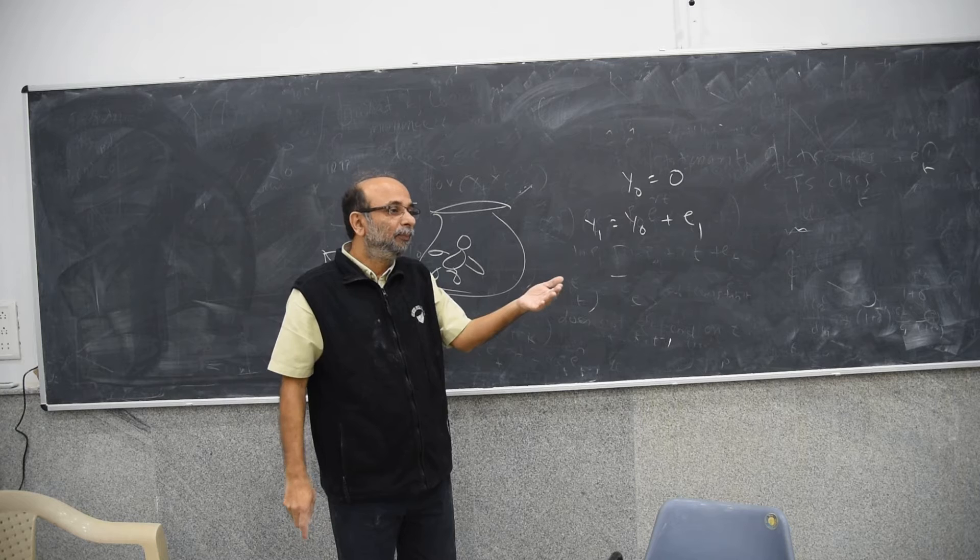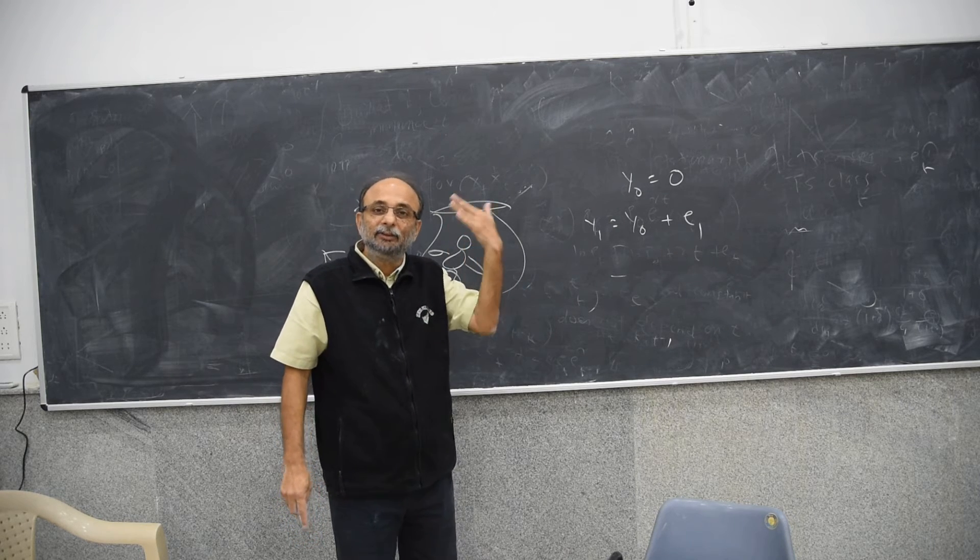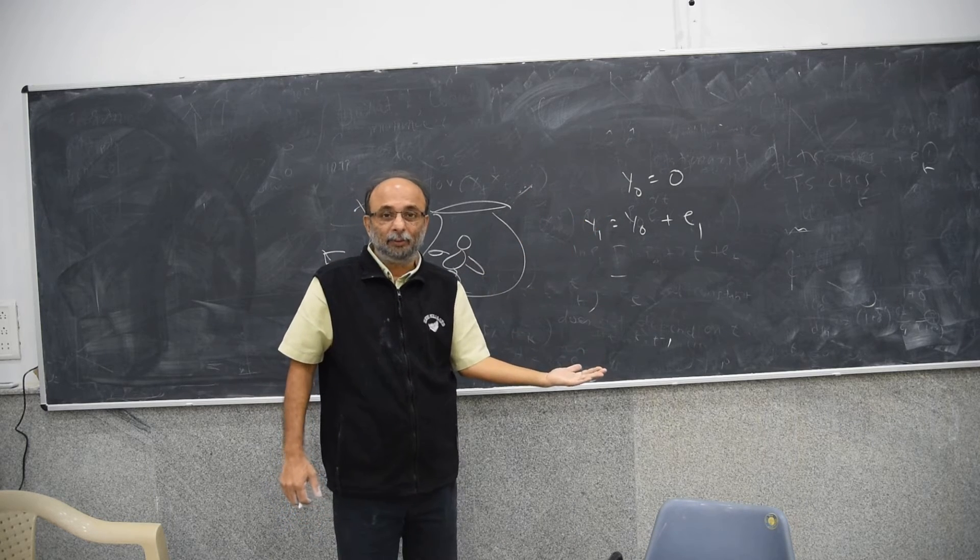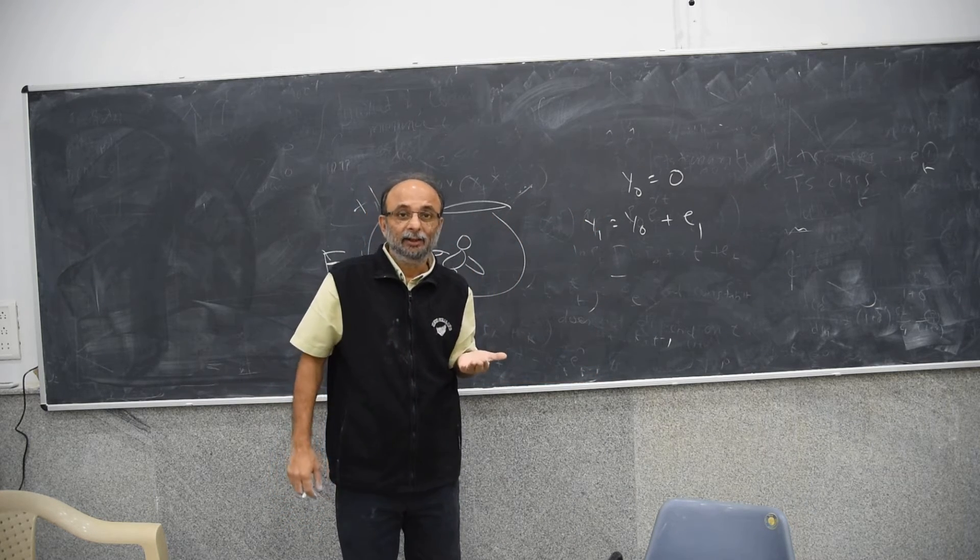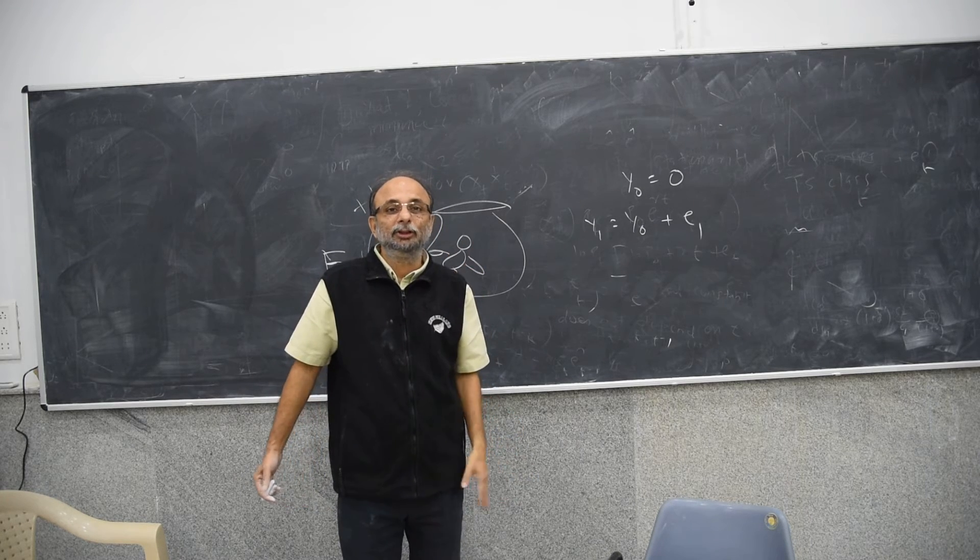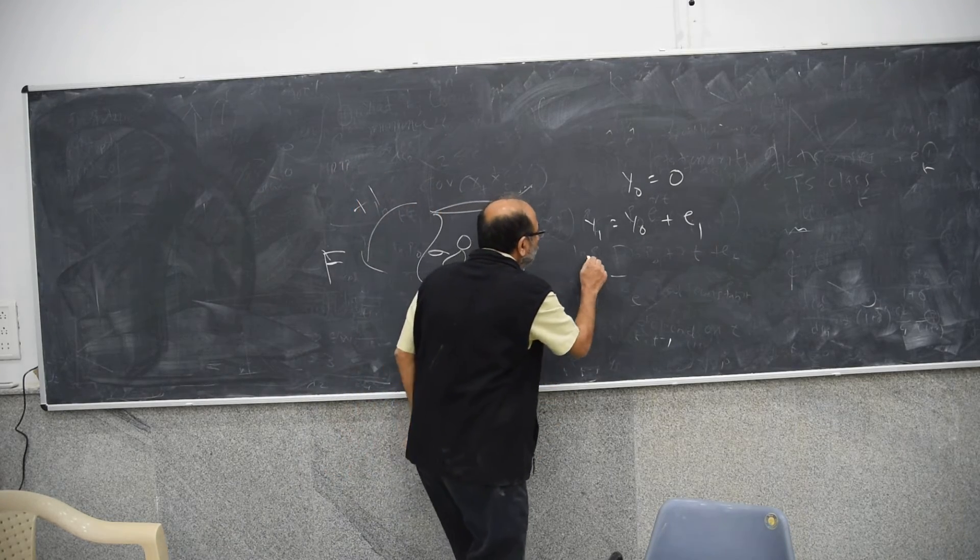So if E1 takes the value plus one, I have one rupee in my pocket. If E1 takes the value minus one, I have minus one in my pocket. I owe one rupee to my friend. We write a note saying that I owe you one rupee, but I don't have any rupee, so it is really minus one. Now, what will be y2?